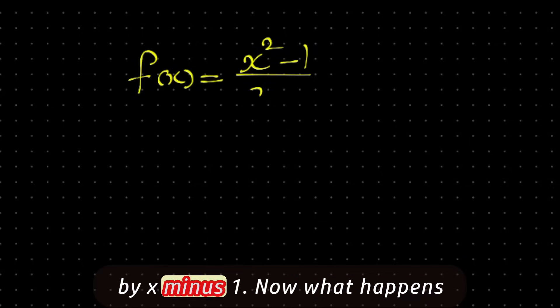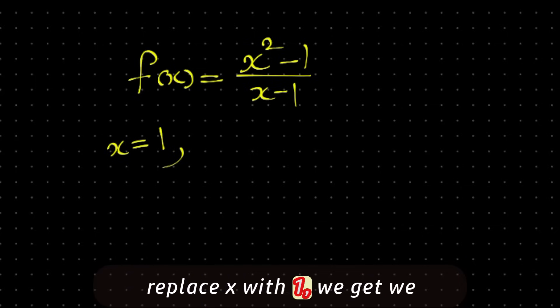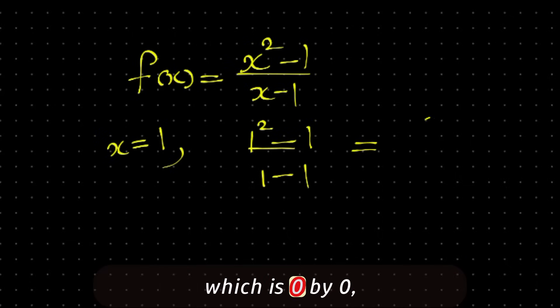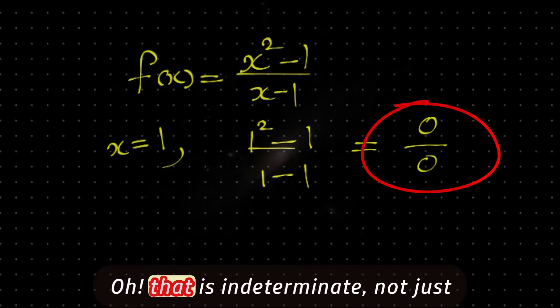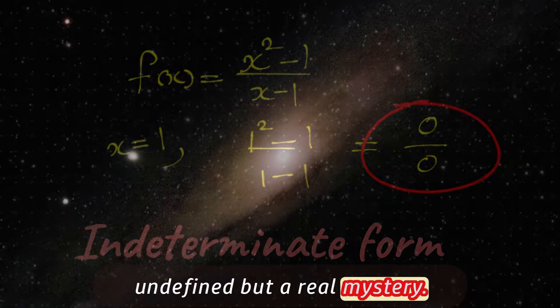Now let's look at this function: f(x) = (x² - 1) / (x - 1). Now what happens to the function at x = 1? If we replace x with 1, we see (1² - 1) / (1 - 1), which is 0/0. That is indeterminate. Not just undefined, but a real mystery.